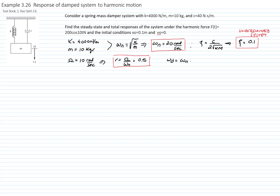We can also calculate the damped natural frequency, which is omega_n times the square root of 1 minus zeta squared. That gives a value of 19.8997 radians per second. Notice that this value is less than the natural frequency, which is correct.